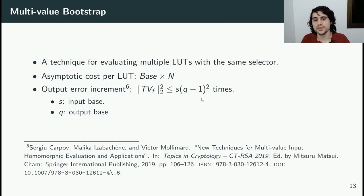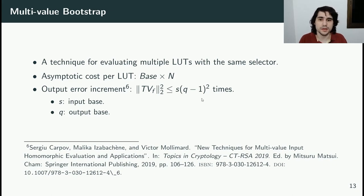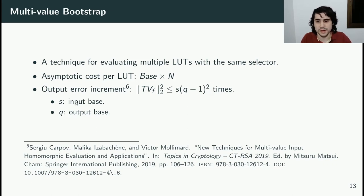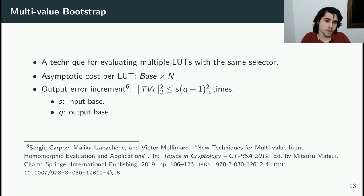Another technique we use is the multi-value bootstrap: we can evaluate many lookup tables with the same selector at once, greatly improving performance. However, it also increases the output error by S times (Q minus 1) squared, where S is the input base and Q is the output base. One of our contributions is showing how we can remove this square power from the equation.